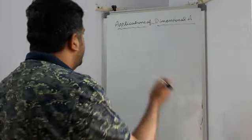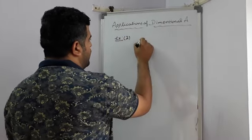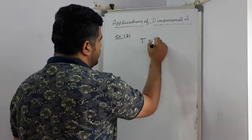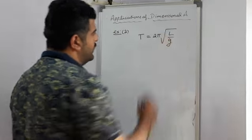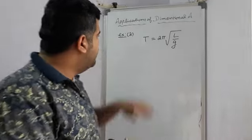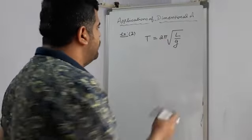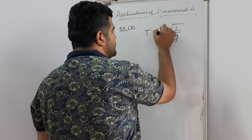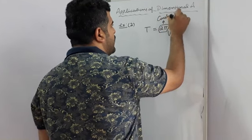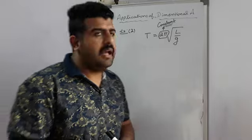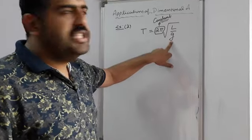Now take another example, Example 2. You have learned this formula in class 9: T = 2π√(L/G). This is the time period of a simple pendulum. T is time, 2π is a numeric constant with value 3.14, so 2π is a dimensionless quantity. L is length and G is acceleration.